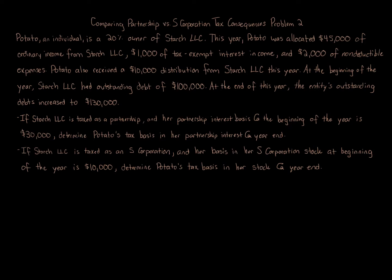At the beginning of the year, Starch LLC had outstanding debt of $100,000. At the end of the year, the entity's outstanding debt increased to $130,000. If Starch LLC is taxed as a partnership and her partnership interest basis at the beginning of the year is $30,000, determine Potato's tax basis in her partnership interest at year-end. If Starch LLC is taxed as an S-Corporation and her basis in her S-Corporation stock at the beginning of the year is $10,000, determine Potato's tax basis in her stock at year-end.